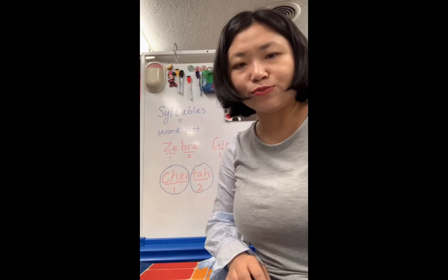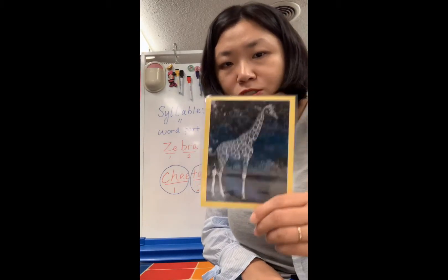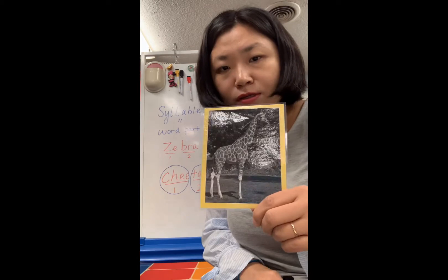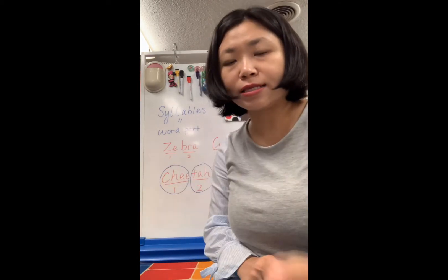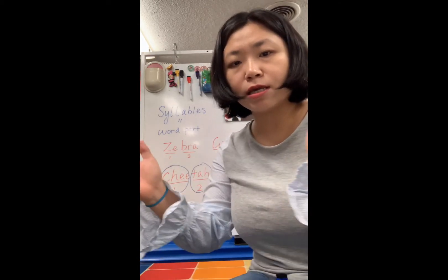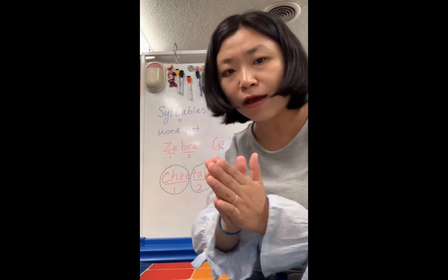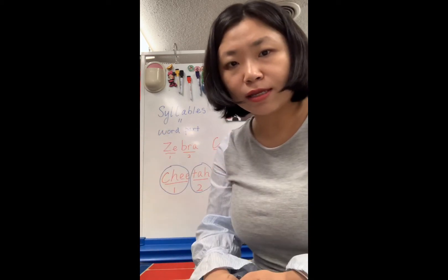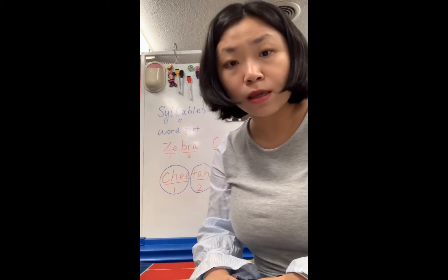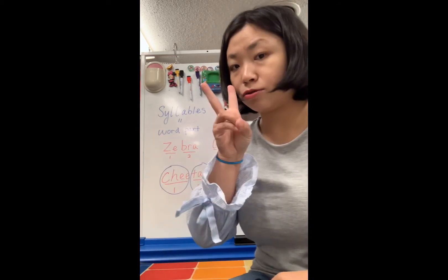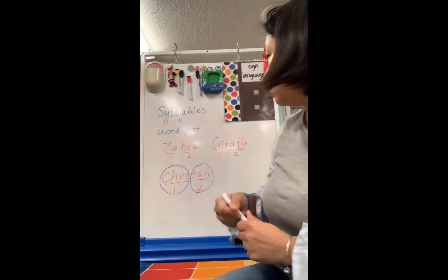Let's move to our last animal — giraffe. Giraffe. Let's clap our hands. Gi-raffe. Gi-raffe. How many syllables did you hear? You're right, there are two syllables in giraffe too.